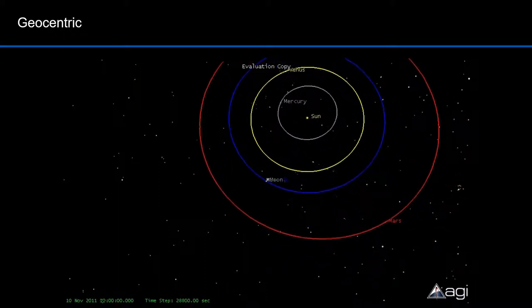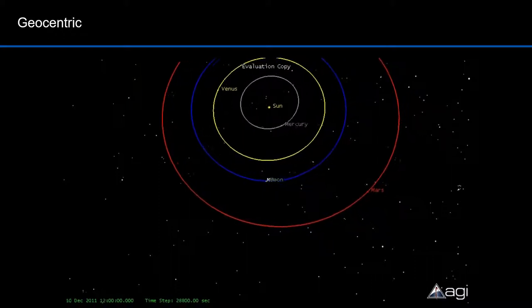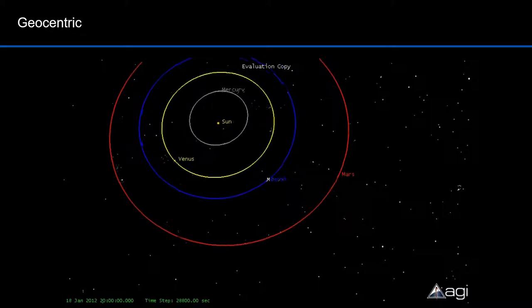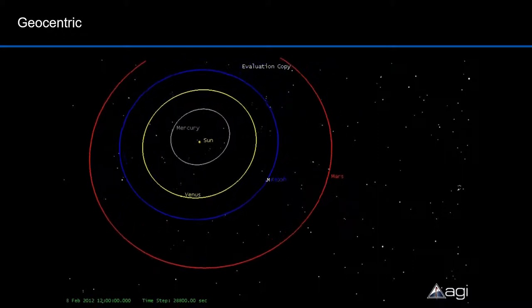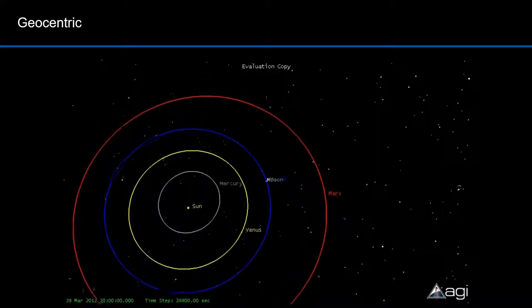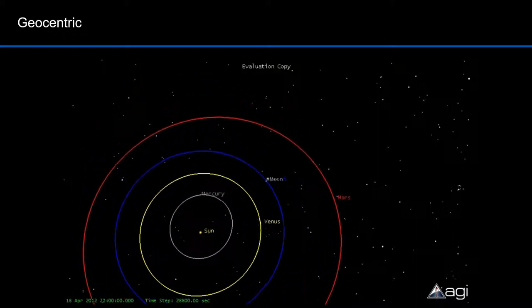It's not that this geocentric model is wrong and the other heliocentric model is right. Both are valid models for predicting the locations of planets in the solar system. The heliocentric one is more intuitive and opens up more advanced theories of physics. It's a preferred model, not necessarily the right model.